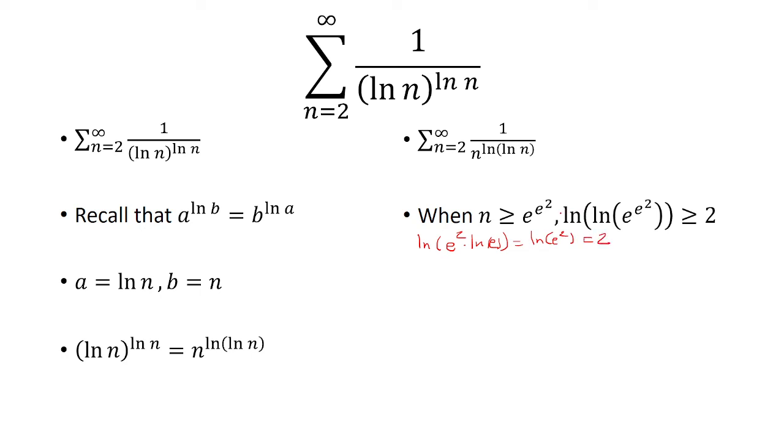Now, the natural log is an increasing function, so this is going to grow greater than 2. So that's why we put 2 as the minimum.